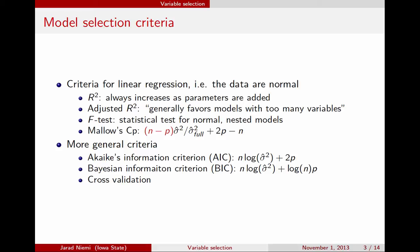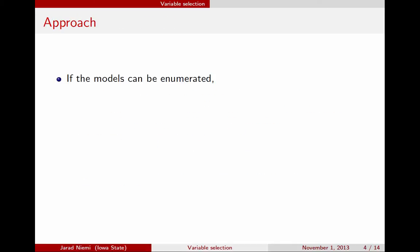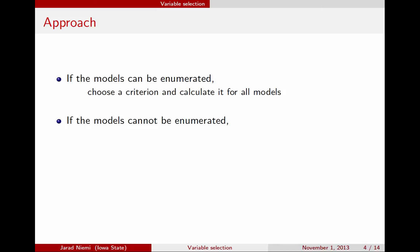The main idea of cross-validation is that you split your data set into two parts: one for constructing the model, and one for seeing how well your model does. If you've chosen a particular criterion, the first thing to consider is whether a computer can enumerate all the models. If that's possible, you calculate the criterion — say AIC — for all models and find the one with the best value. But if you have too many explanatory variables and the models cannot be enumerated, you use a stepwise variable selection procedure.